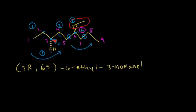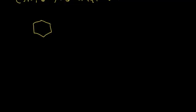Let's look at cyclic alcohols — ring systems. For an alcohol with six carbons in a ring and an OH coming off it: without the OH we'd call it cyclohexane, and since this is an alcohol, we just change the ending to cyclohexanol. You don't really need a number, but you could write a 1 there — it's implied if you don't.